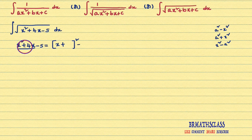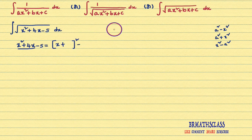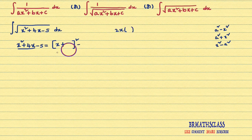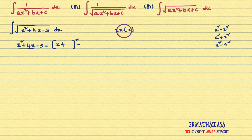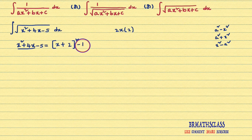After x², if minus sign is there, we will write minus here. Now you need to find this number. To find this number, we have a trick: always keep 2x in your mind. 2x into some number — this number we need to find. 2x into this number gives you 4x. 2x into 2 is 4x, so here you write 2. After writing like this, whatever number is there, you square it. 2 squared is 4. So if you expand this expression, you will get x² plus 4x only.